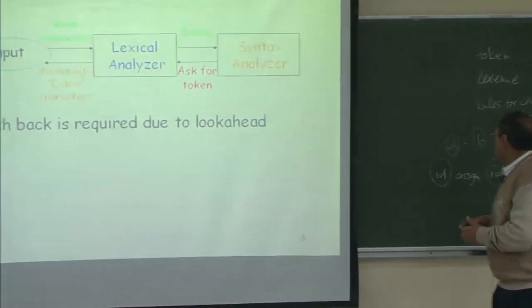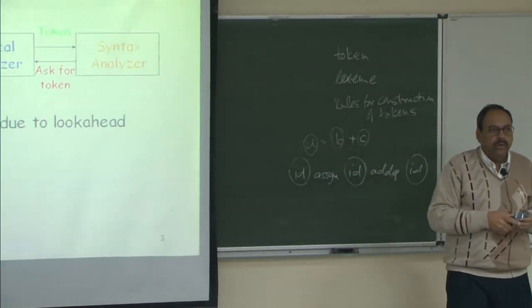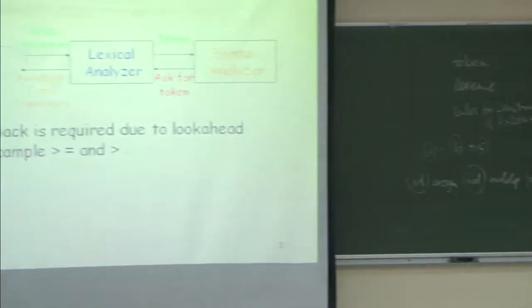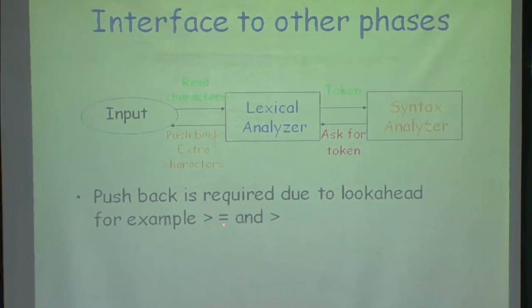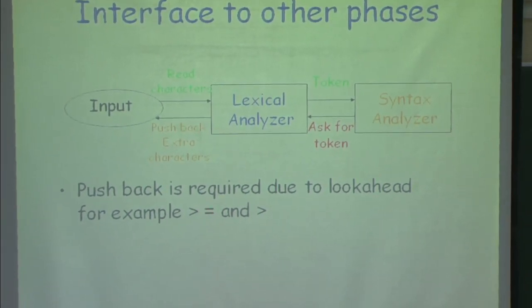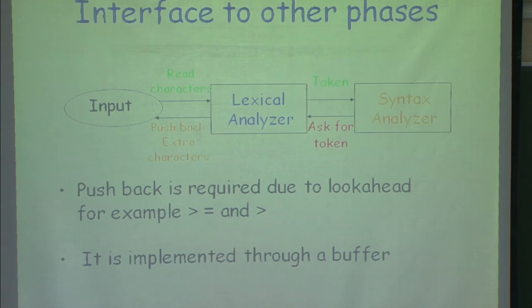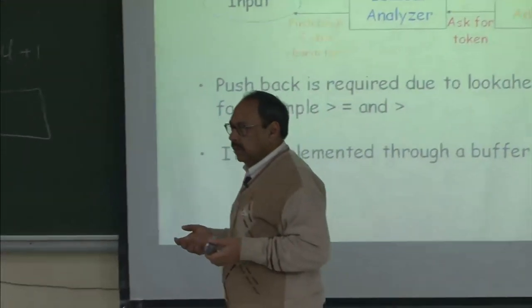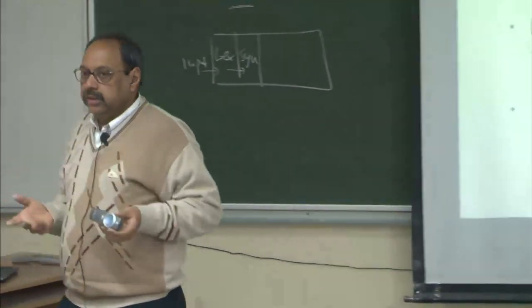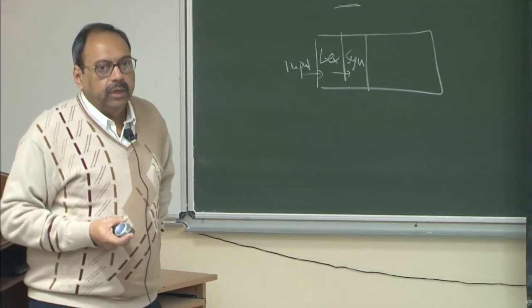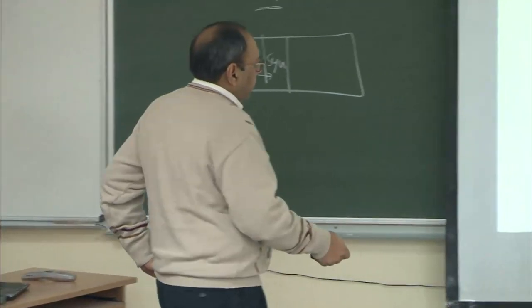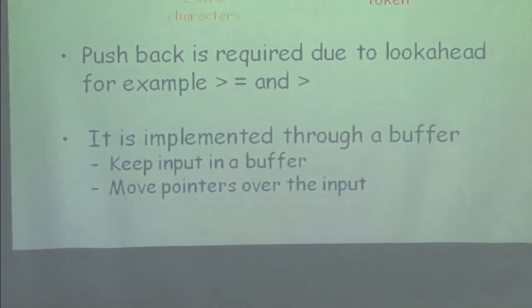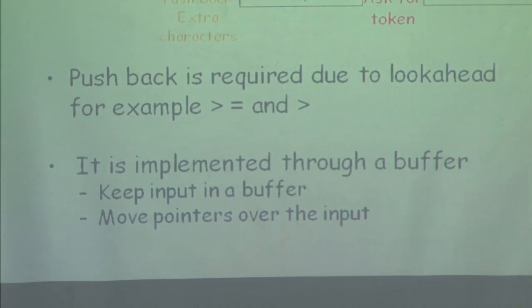Pushback is required due to lookahead — to find out the word boundary. For example, if I am reading '>' I will not know unless I read the next character whether it is '>=' or just '>'. This can be implemented through a buffer: reading or pushing back a character just means moving an input pointer left over the buffer. Pushing back is not like 'ungetc' in C — you can just use a buffer to implement it. Keep input in a buffer and keep moving this pointer over the buffer.